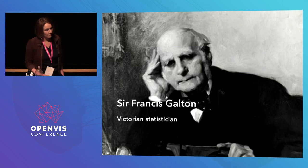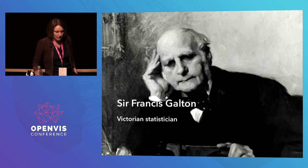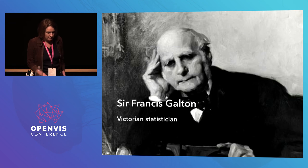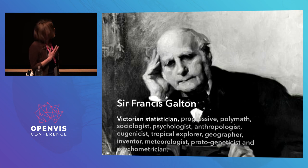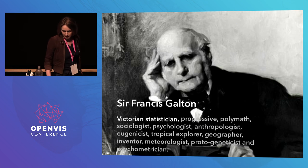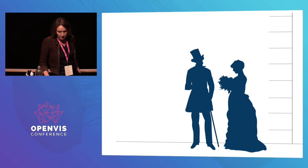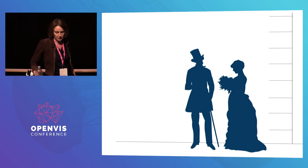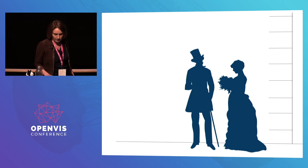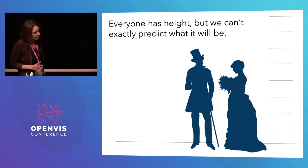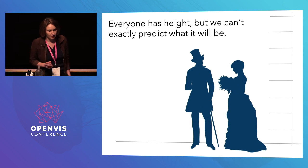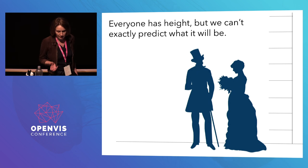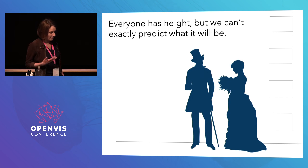The story I want to start with is that of Sir Francis Galton. Galton was a Victorian statistician who was thinking about, among other things, uncertainty. He became interested in height as a physical property, and his interest was driven by a simple observation: everyone has height, but we can't exactly predict what it will be. This bugged Galton a lot because he wanted to know how to predict heights.